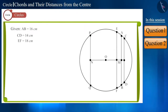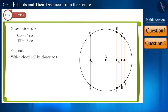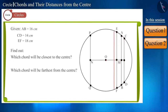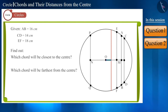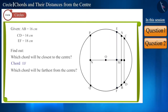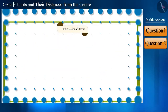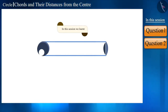Friends, if in this figure we draw a chord CD whose length is 14 cm and a chord EF whose length is 18 cm, then which chord will be closest to the center and which will be farthest? We know that the closer we move to the center, the length of the chord increases, but their distance from the center decreases. So chord EF, which is the largest, will be the closest to the center, and chord CD, which is the shortest, will be the farthest from the center.